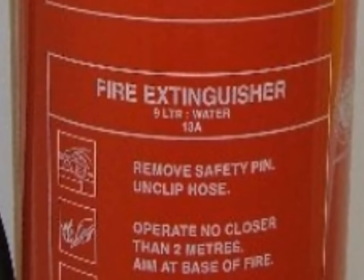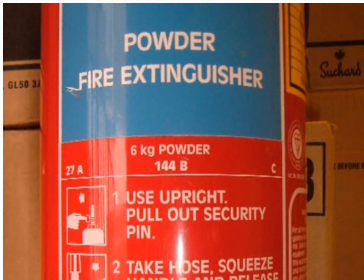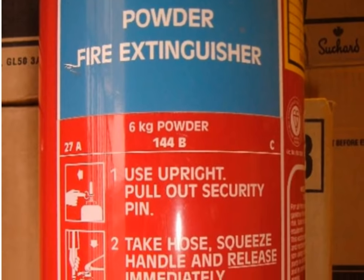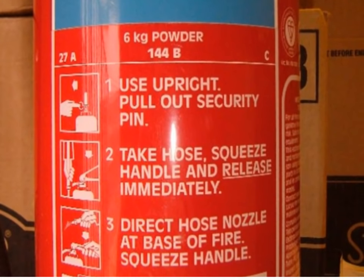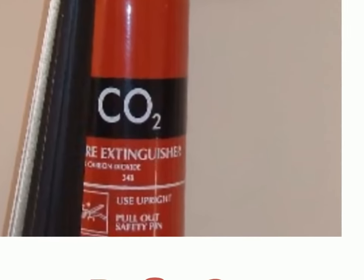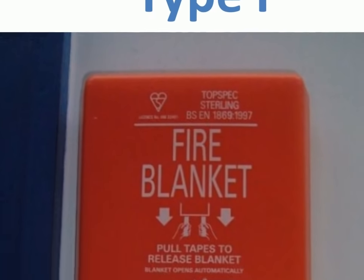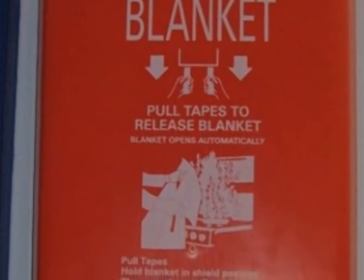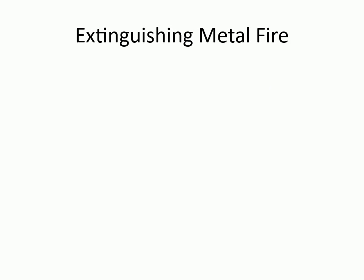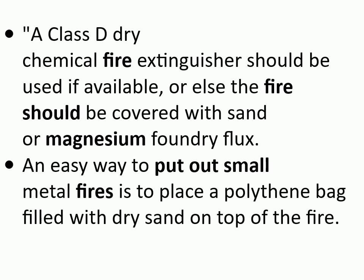Type A extinguisher. Type A, B, C, and E extinguishers. Type B and C. Type F. Extinguishing metal fire: a Class D dry chemical fire extinguisher should be used if available, or else the fire should be covered with sand or magnesium foundry flux. An easy way to put out small metal fires is to place a polythene bag filled with dry sand on top of the fire.